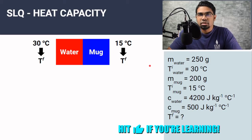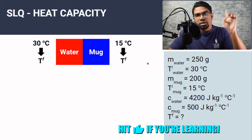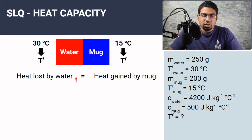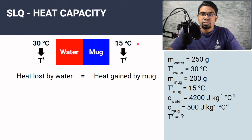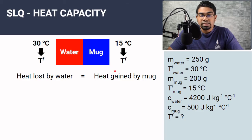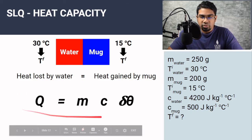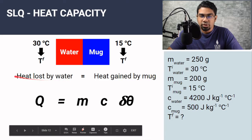To understand thermal equilibrium more, please see the video in the link. When they reach the final temperature, they have the same final temperature. The heat lost by the water equals the heat gained by the mug, since the water has the higher temperature. There are some assumptions here which I will go through later. The formula for heat is Q = mcΔθ — this is our formula for heat energy.